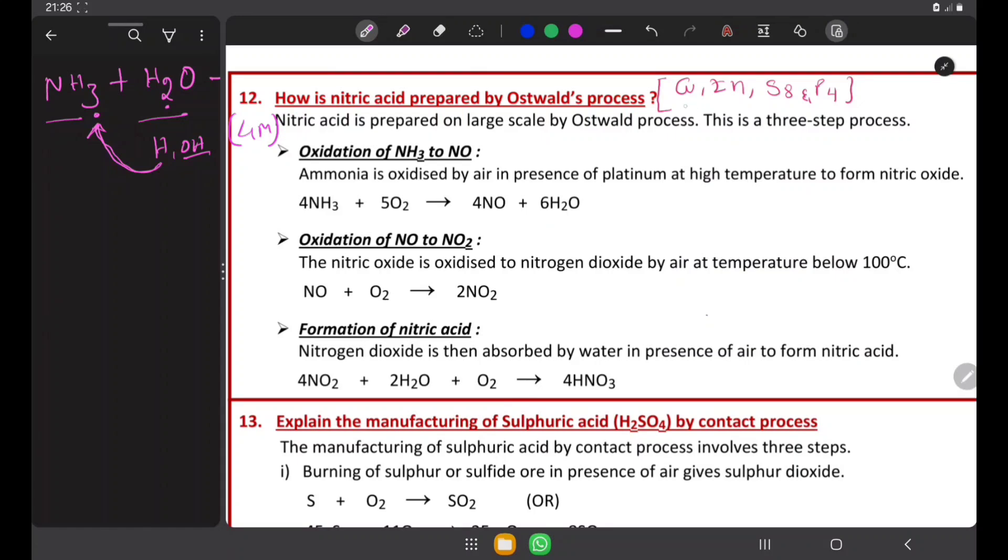This is one of the important questions for full marks and generally it will be asked in public exam for full marks. And sometimes the chemical properties of nitric acid with copper, zinc, sulfur and phosphorus also may be asked. But in this video, our discussion is limited to only Ostwald's process, that is the preparation of nitric acid. Let's start the discussion.